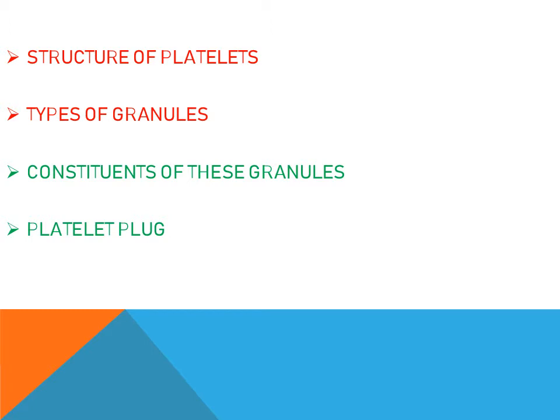As mentioned in the previous lecture, platelets are normally anucleated cells with a rounded or disc-shaped structure. These platelets are derived from megakaryocytes in the bone marrow. There are two types of granules in platelets: alpha granules and delta granules, also called dense granules.